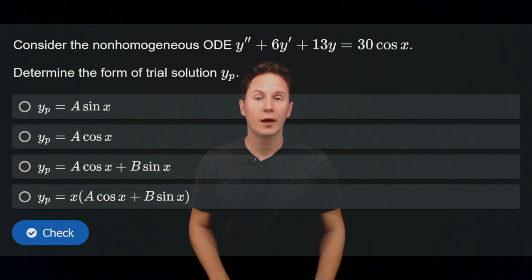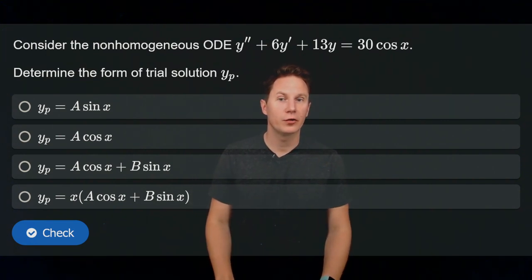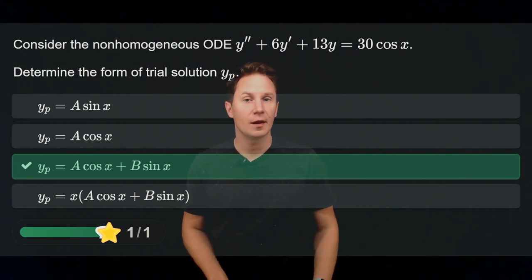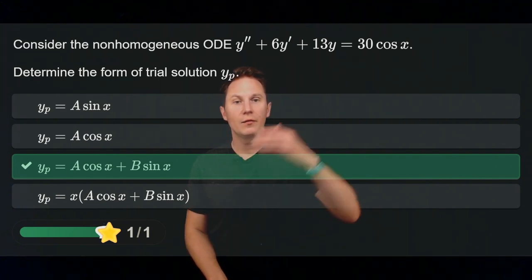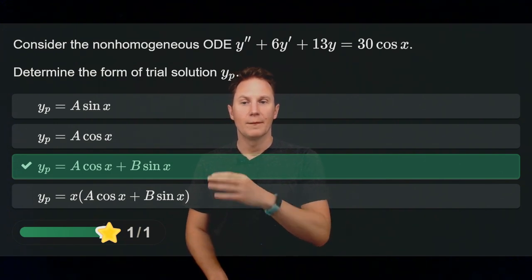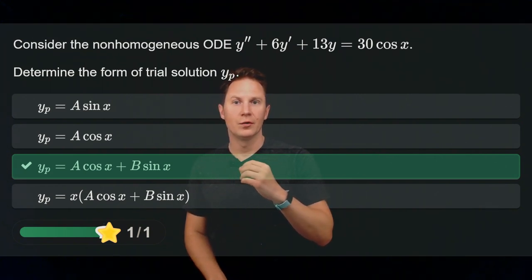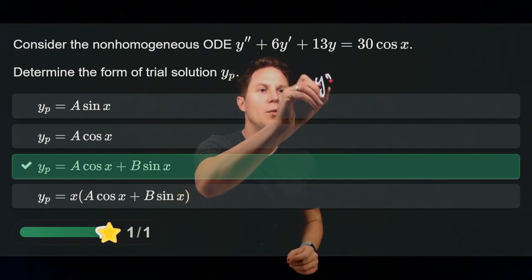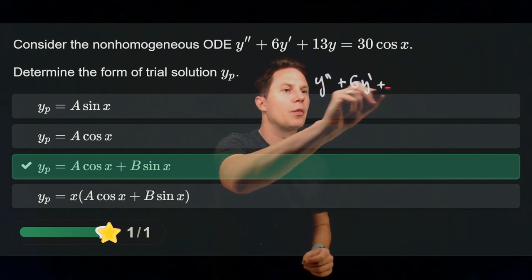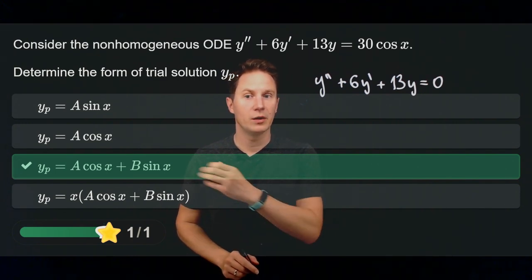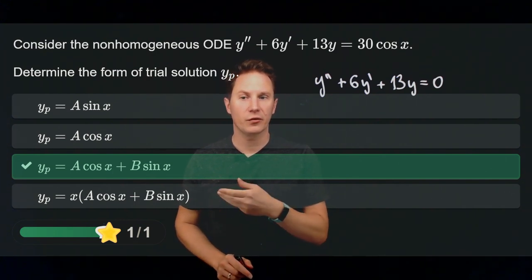Consider the non-homogeneous ODE y double prime plus 6 times y prime plus 13y equals 30 cosine of x, and determine the form of a trial solution y sub p. The trial solution is a times cosine of x plus b times sine of x. Since the right-hand side is a multiple of cosine of x, we take a linear combination of cosine and sine of x. However, one must be careful because resonance could occur, so first we need to check the general solution of the complementary equation y double prime plus 6y prime plus 13y equals 0.